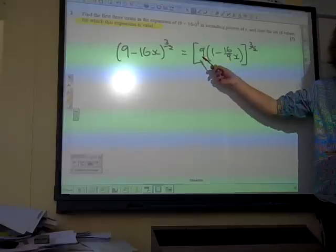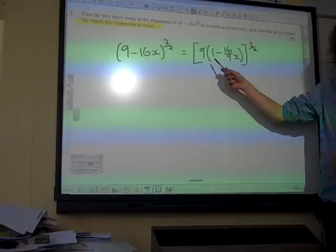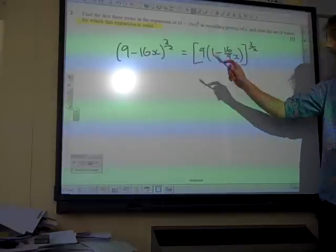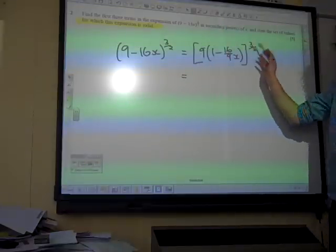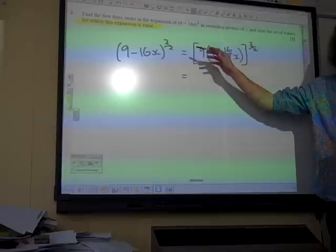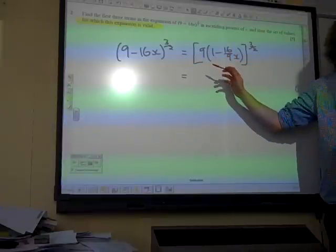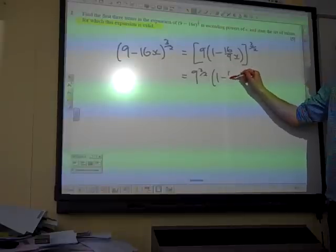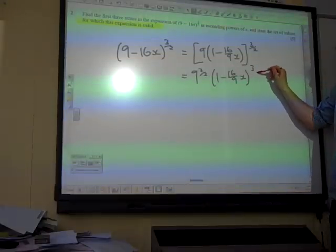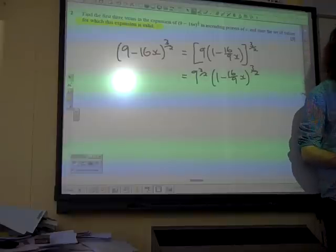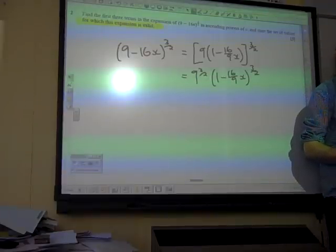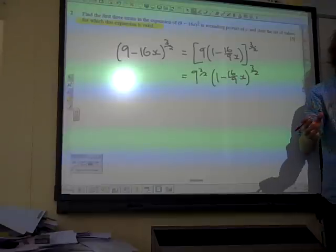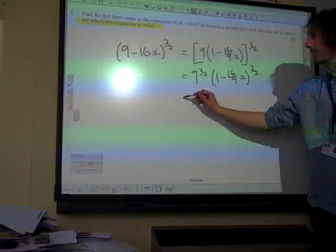Can we see that? We've taken the 9 out, multiply through that bracket inside, 9 times 16 over 9 gives you 16x. Now, the power is applied to everything inside that square bracket. So that is 9 to the power of 3 over 2 times 1 minus 16 ninths of x to the power of 3 over 2. 9 to the power of 3 over 2, that would be the square root of 9 cubed. So that would be 3 cubed, which is 27.